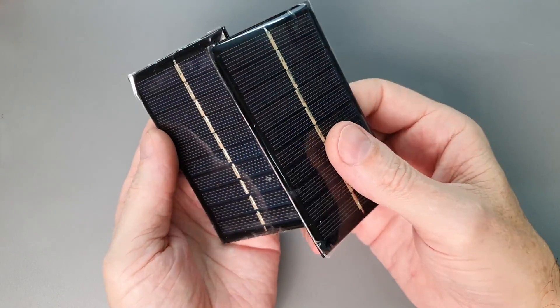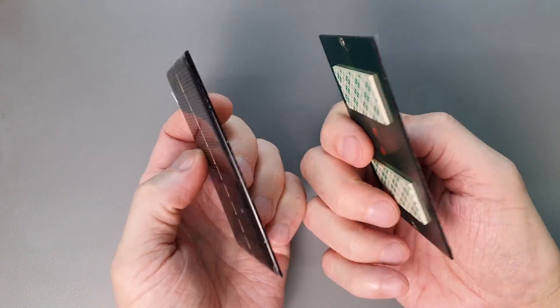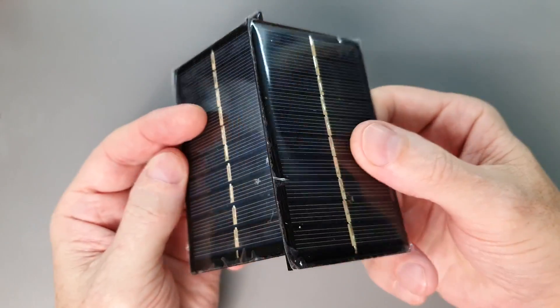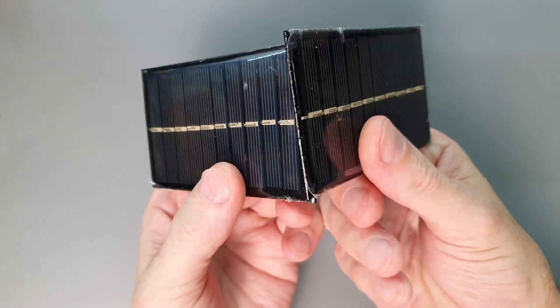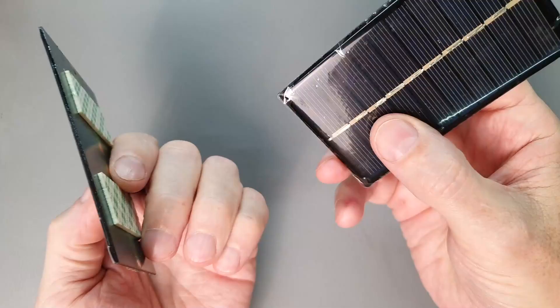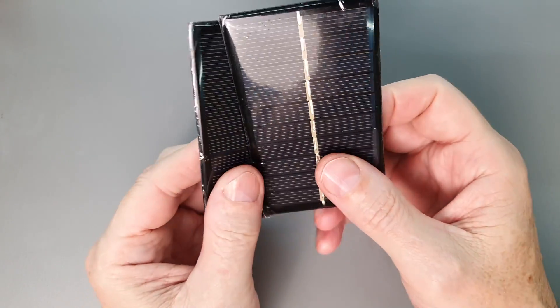This got me thinking, how could we use two small solar panels to both power the motor in the direction that we wanted to go and at the same time figure out which one was brighter so we knew which way to turn the motor?